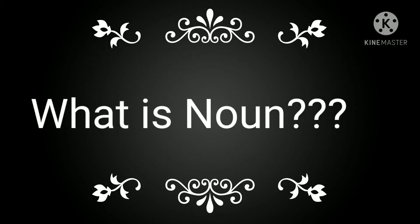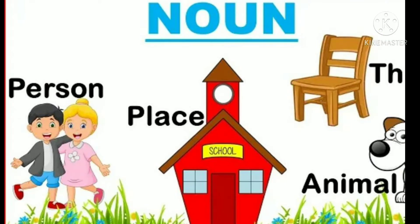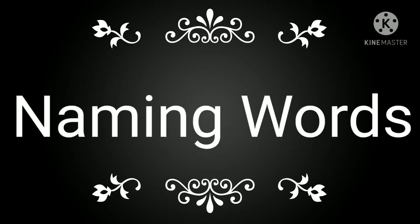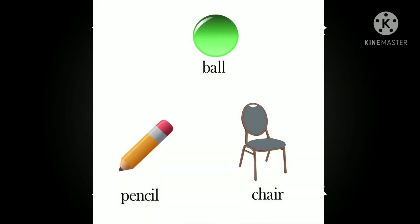So students, tell me what is a noun? Noun means the name of a person, place, animal and thing. We can also say that nouns are called naming words. Everything has a name in this world and that name is a noun. For example, ball, pencil, chair — these are the names of things.